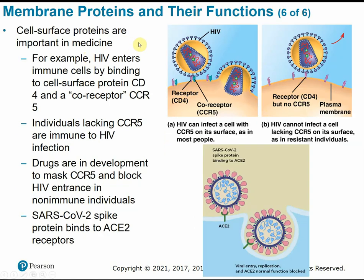Membrane proteins that act as surface receptors play an important role in medical applications. The HIV virus enters immune system cells by binding to a protein receptor on the immune cell membrane surface. Some individuals naturally have no receptors — they're missing the gene for one of these co-receptors — so the HIV virus is not able to bind and attach to their cells, making them essentially immune or resistant to HIV infection. There are currently some drugs in development that artificially block or mask this co-receptor to prevent HIV from attaching to cells in the first place.